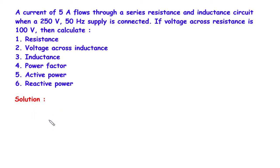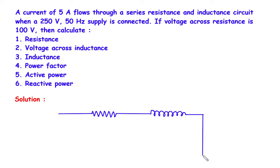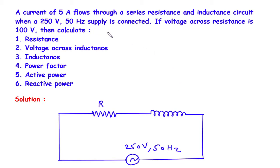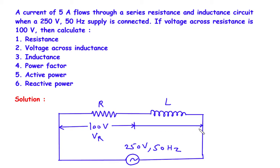Solution. First of all we will draw the circuit. The circuit will look like this — a resistance in series with an inductor, with the voltage across it being a 250V AC supply at 50Hz. The voltage across resistance is 100V, so Vr = 100V, and we need to find Vl.